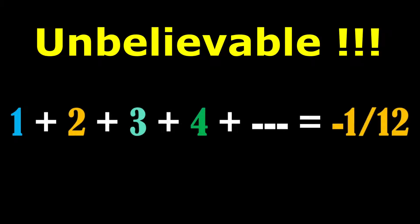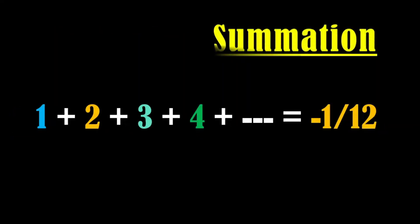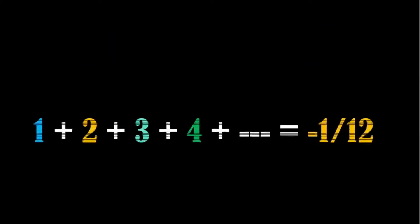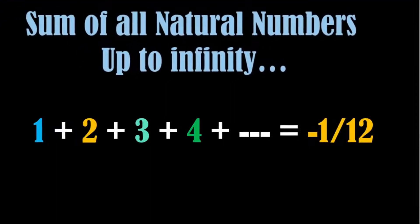This series is unbelievable. Do you also think that the sum of the series that you are seeing here is wrong? After all, how can the sum of an infinite series having all the natural numbers, which are all positive, be a negative number?